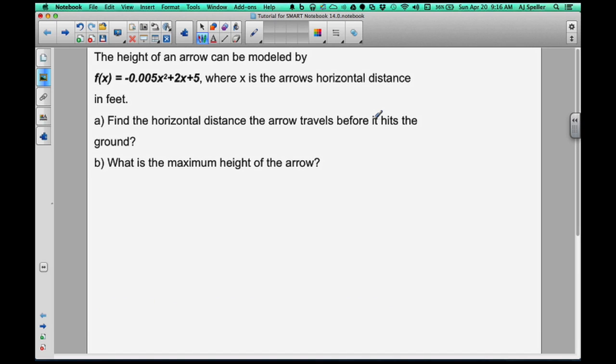The height of an arrow can be modeled by this function and we see this function is a quadratic because its highest exponent is 2. Where the value of x is the arrow's horizontal distance in feet. Let's begin with part A.